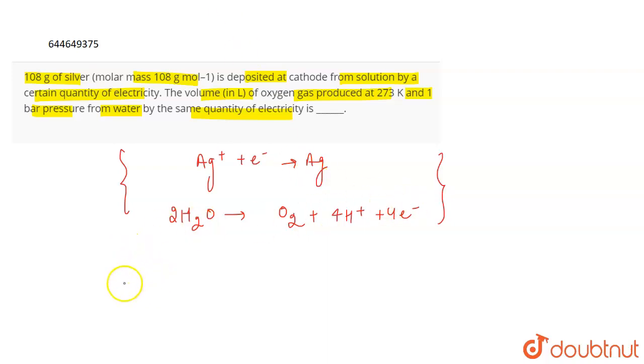These are the two reactions that take place when electricity is passed through the solution. So what do we have? The weight deposited is given as the molecular weight divided by NF. N is the number of electrons involved. F is the Faraday constant into Q. Q is the quantity of electricity passed.